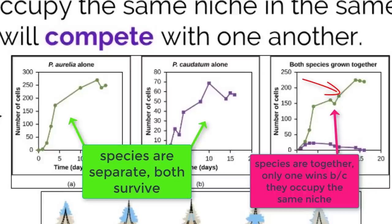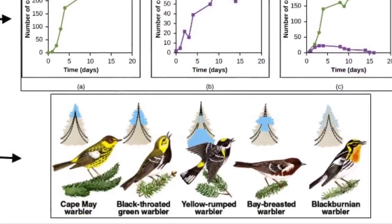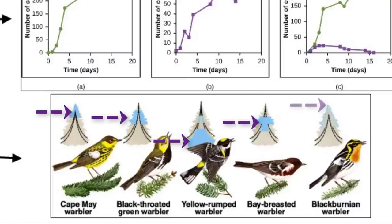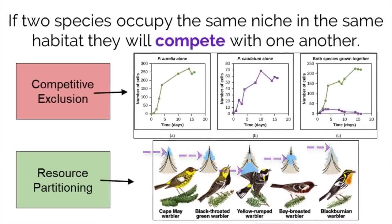A different type of outcome that could occur if two species occupy the same role is resource partitioning. With resource partitioning, each organism will only occupy part of their niche, leaving room for other organisms to do the same. This example shows birds occupying different parts of the same tree without competing for space, which allows everyone to survive. If they were alone on the tree, each bird would occupy all of the space, but because multiple species are trying to occupy the same space, they each take a section and everyone has their own new unique niche.